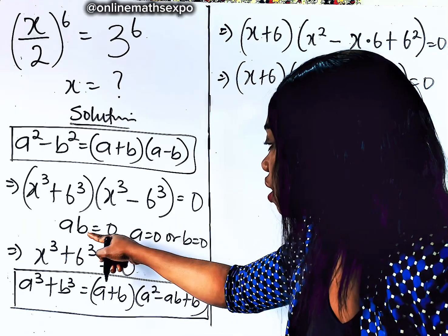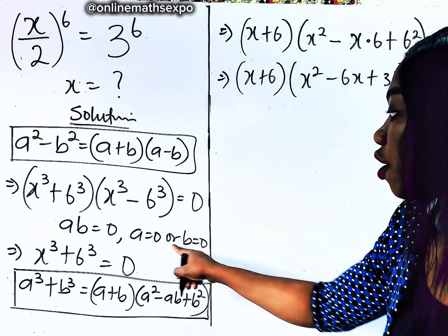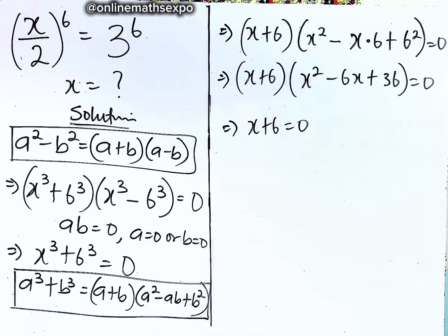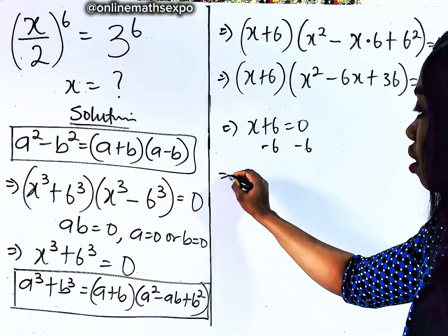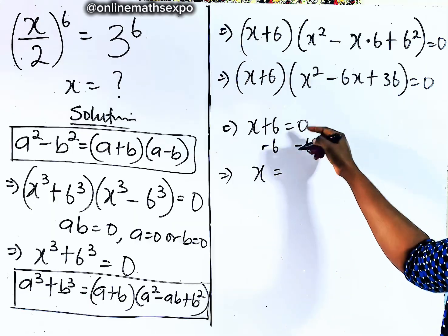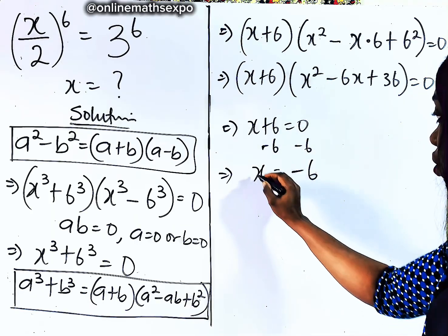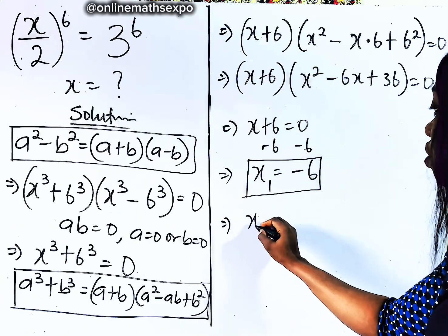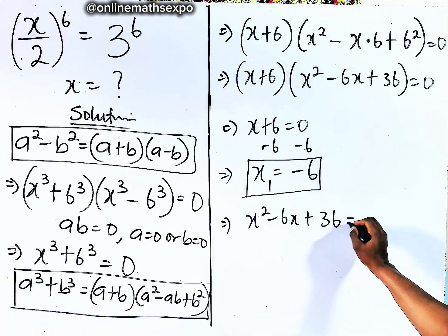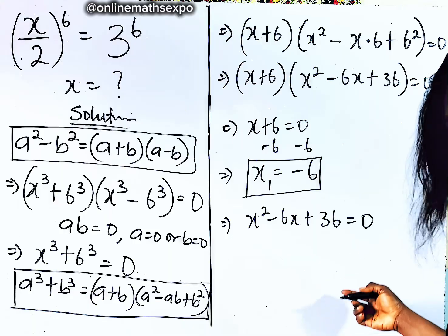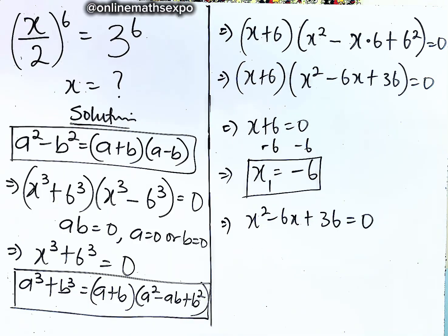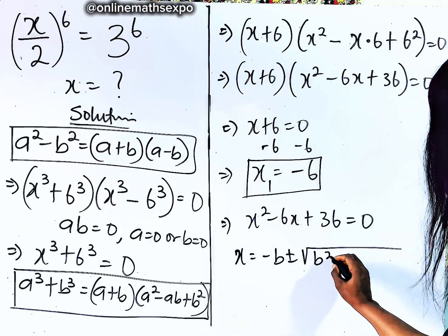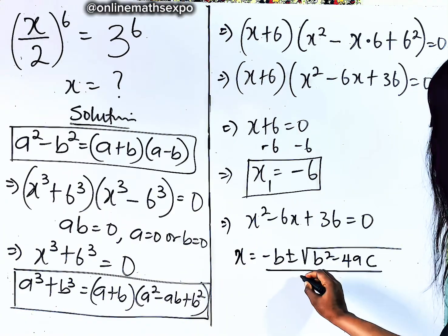Since the product equals 0, either factor is 0. Setting x + 6 = 0 and subtracting 6 from both sides gives us x equals negative 6 — this is the first value of x. Now let's take the quadratic factor: x squared minus 6x plus 36 equals 0. This is a quadratic equation since the highest power of x is 2. Quickly remember the quadratic formula: x equals negative b plus or minus square root of (b squared minus 4ac), divided by 2a.